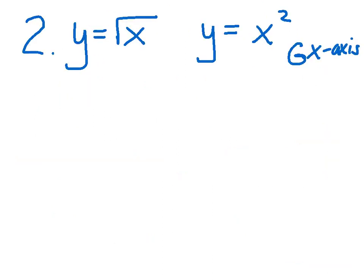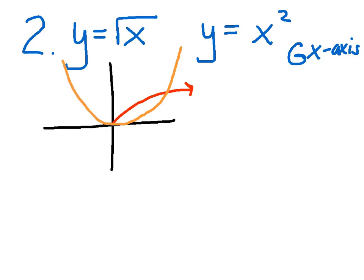Question 2: y equals radical x and y equals x squared, and we're going to revolve this around the x-axis. Again, a perfect sketch using two different colors. Ask yourself: is it a disk or a washer? You might get tricked — it sits on the x-axis only for a split second, and once you veer off there's clearly a gap. If at any point you get a gap, it's an automatic washer.